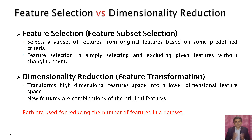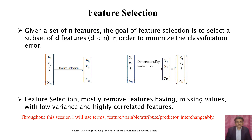So there is a major difference between feature selection and dimensionality reduction. In feature selection we select a subset of features based on some predefined criteria, while in dimensionality reduction we transform features from a high dimensional space into a low dimensional space, and from those low dimensional features we may select the top few. Both are used for reducing the number of features in a dataset. This slide shows feature selection in a bit more detail.